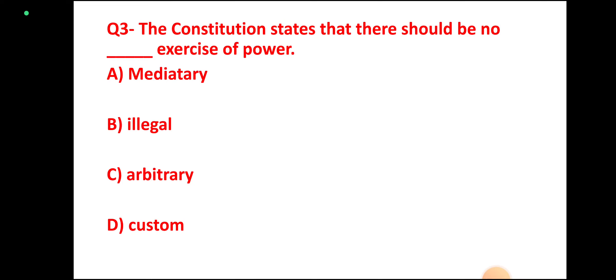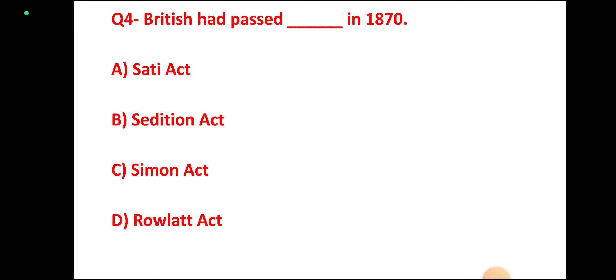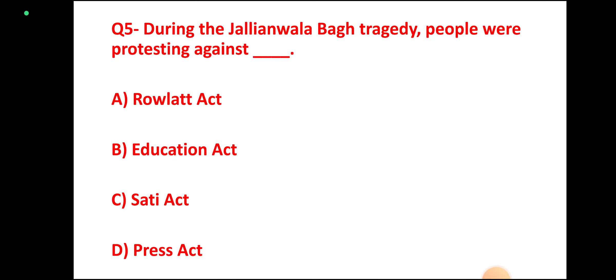Question 4: The British had passed dash in 1870 — Sati Act, Sedition Act, Seaman Act, or Rowlatt Act? Correct answer: Sedition Act.